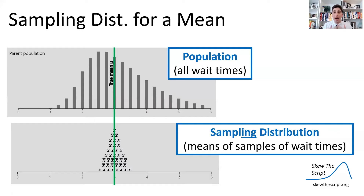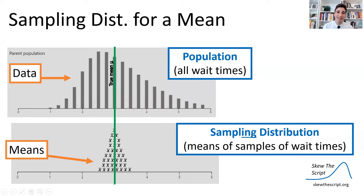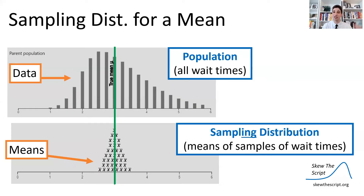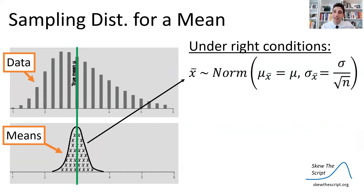To recap: we had a population distribution — all wait times from all VA clinics. And then we have a sampling distribution of means. The population is data — the wait times from all the clinics at the VA. The sampling distribution is a distribution of sample means: we got a sample of 30 VA clinics, found their wait times, found the mean — that's one mean. Another sample of 30 clinics, found their mean wait time — that's another mean. It's a collection of those means. It turns out we can model the sampling distribution for means using a normal curve.